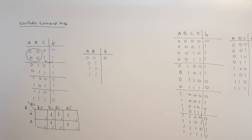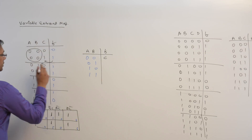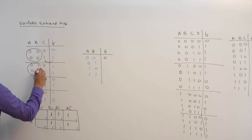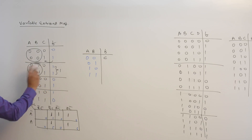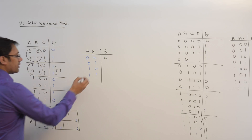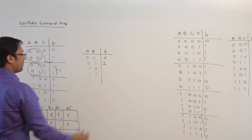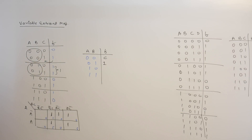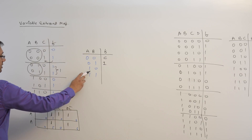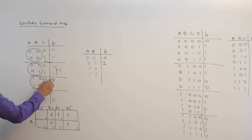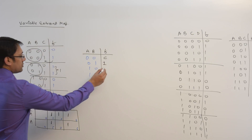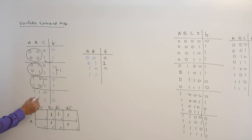When A and B are 0-1, the function F is only giving 1 regardless of the value of C. So in this case the function F gives only 1. When the combination is 1-0, the function F is behaving exactly like C, so here we write C.